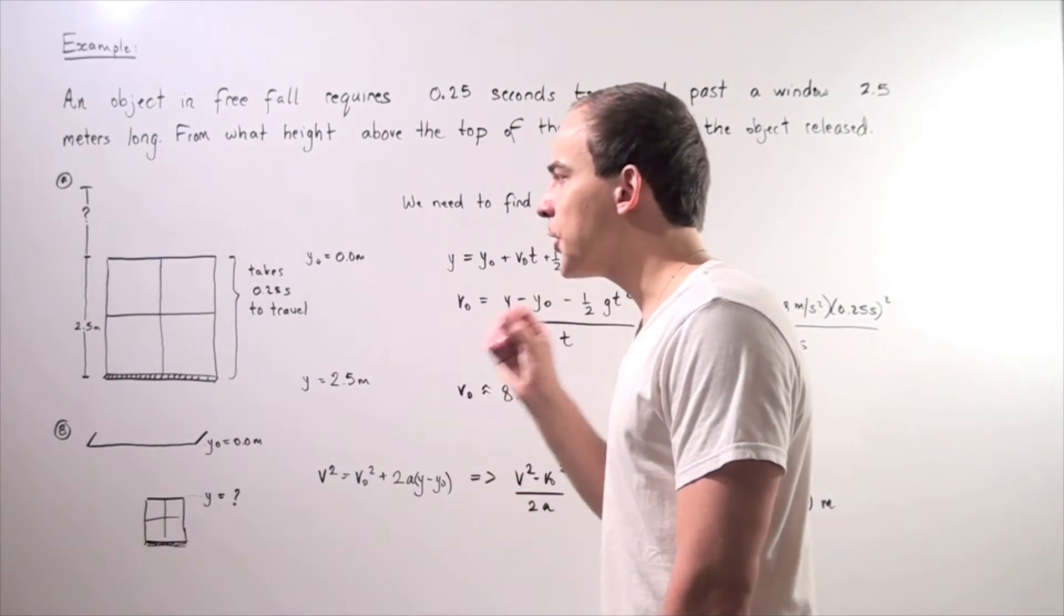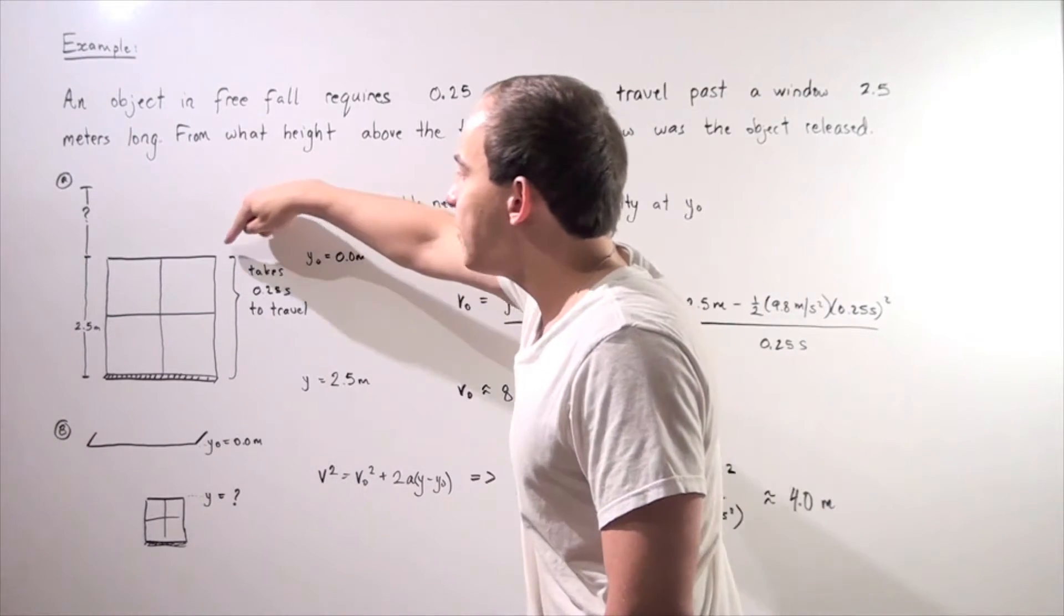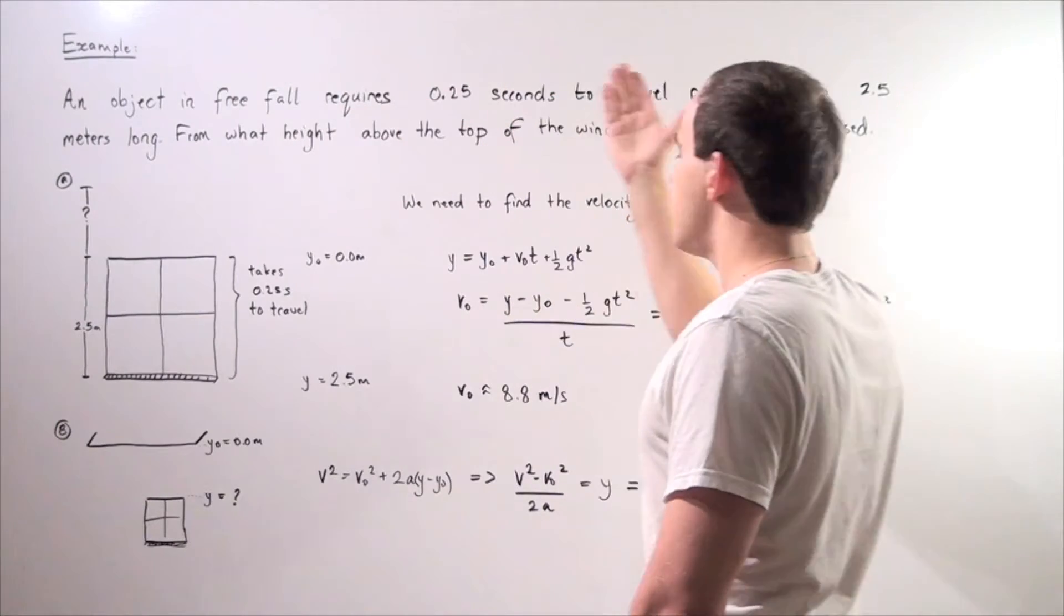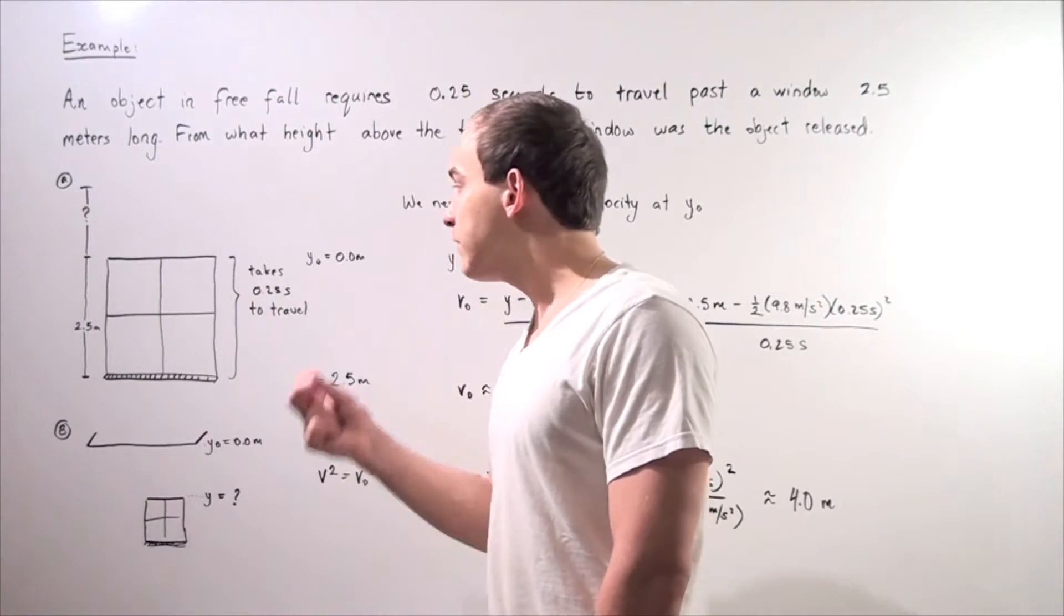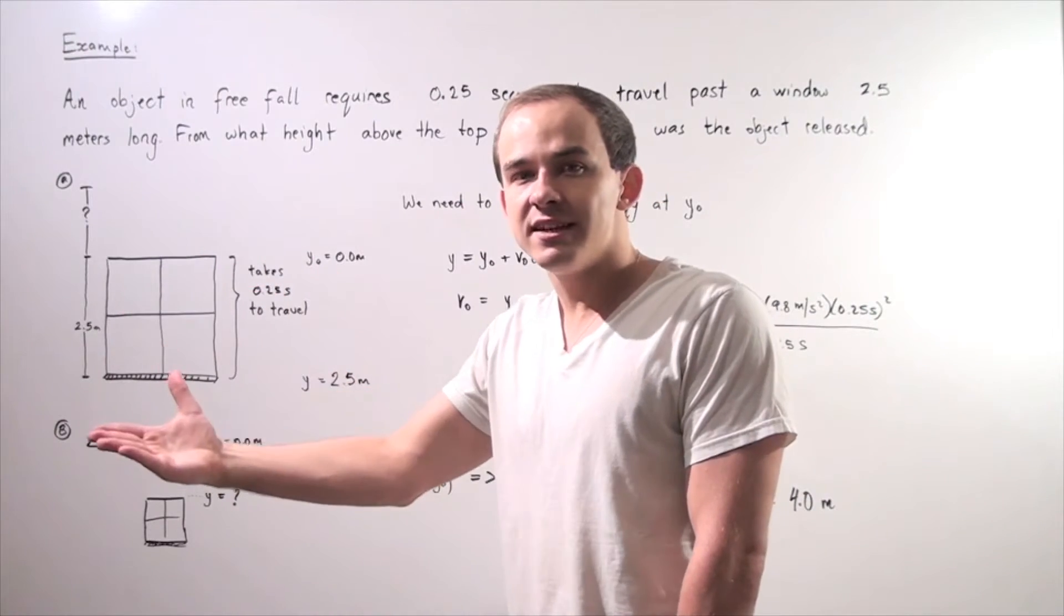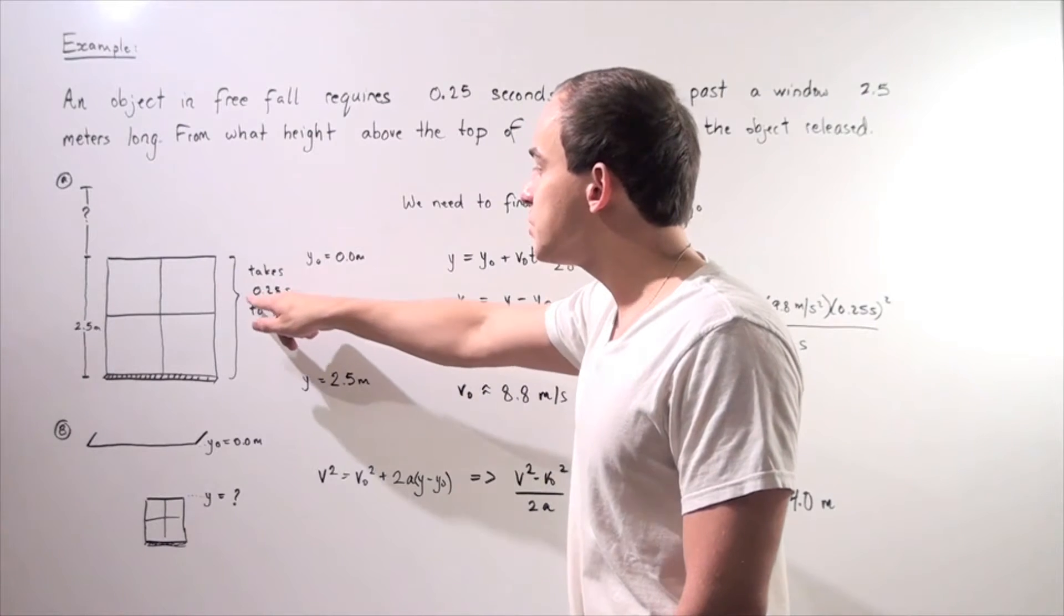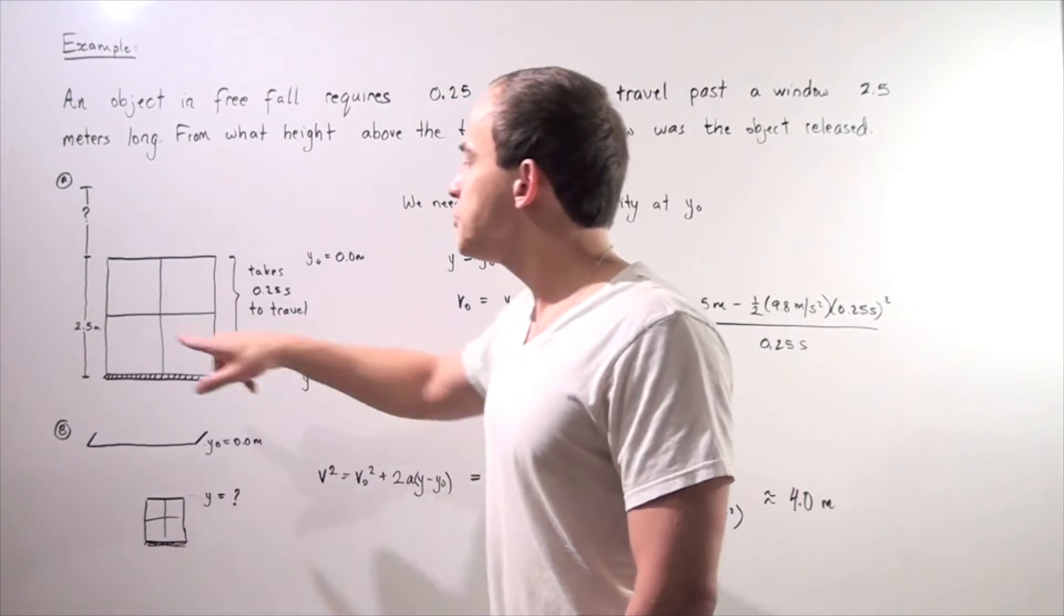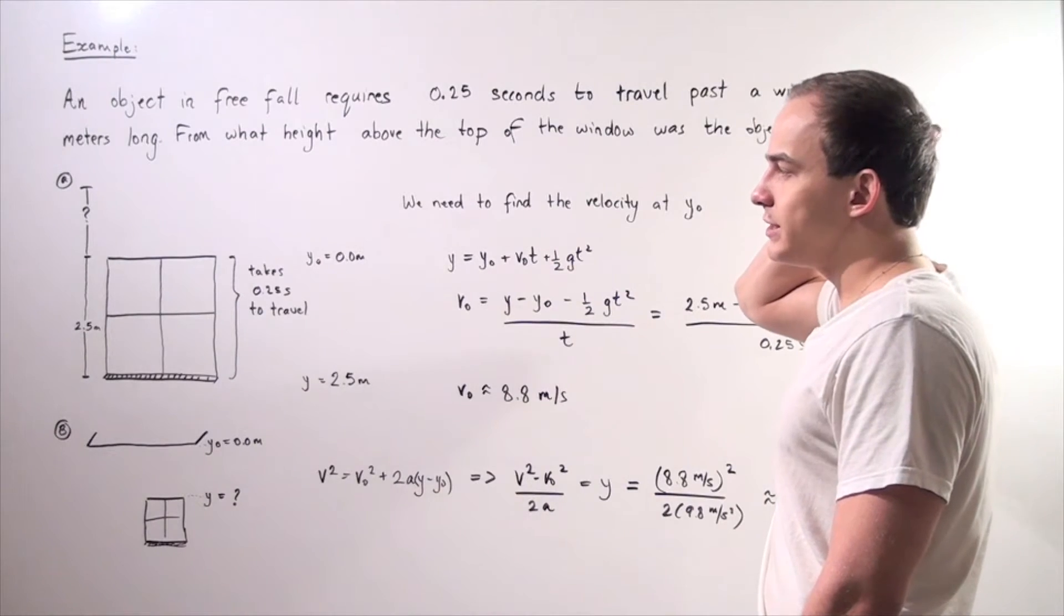In the first step we have to determine what the velocity of the ball or the object was at the top of the window, and the way we can do it is using the information given. With that velocity and our acceleration due to gravity, the object took 0.25 seconds to travel from the top to the bottom of the window which is 2.5 meters long. So let's set up the following initial conditions.